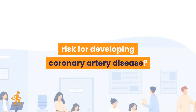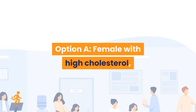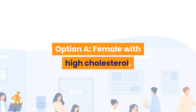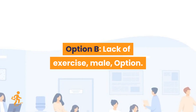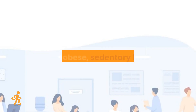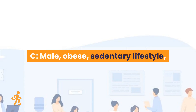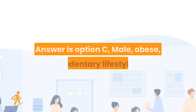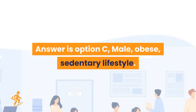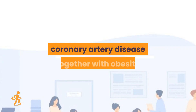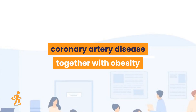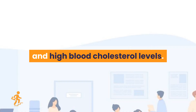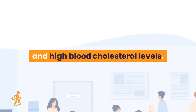Question 25. Which category of people are at high risk for developing coronary artery disease? Option A: Female with high cholesterol. Option B: Lack of exercise, male. Option C: Male, obese, sedentary lifestyle. Option D: Female, obese, non-sedentary lifestyle. Answer is Option C: male, obese, sedentary lifestyle. Men are generally at greater risk of coronary artery disease, together with obesity and high blood cholesterol levels.